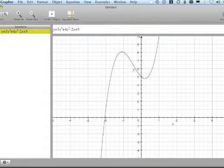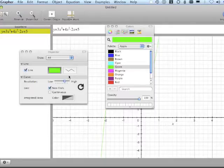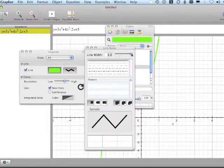I'm going to select that one and use the inspector to change the color for reference to green, and I'm also going to make it a little bit thicker.